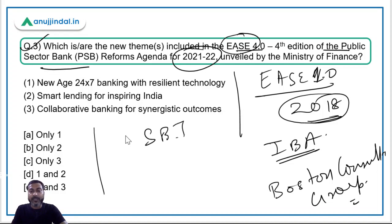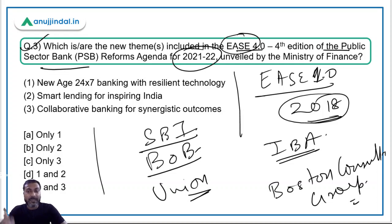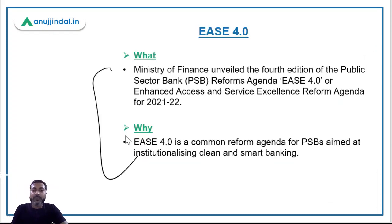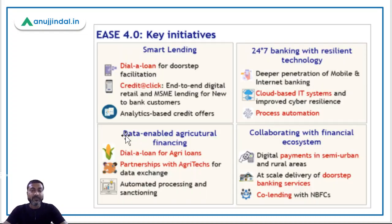Now EASE 4.0 has been launched. In EASE 3.0, the top bank was State Bank of India at number one, Bank of Baroda at number two, and Union Bank of India at number three. EASE 4.0 has now been released — the reforms agenda has been launched and results will come later. The Ministry of Finance, headed by Nirmala Sitharaman, has unveiled this fourth edition aimed at institutionalizing clean and smart banking.